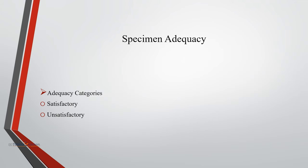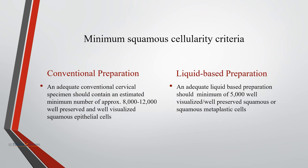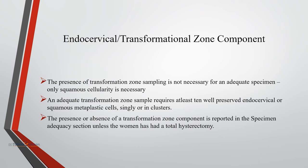Regarding specimen adequacy, cellularity is the most important quality indicator. Depending on the adequacy criteria, cervical specimens can be categorized as satisfactory or unsatisfactory. For conventional preparation, a minimum of approximately 8,000 to 12,000 well-preserved and well-visualized squamous epithelial cells are required. For liquid-based cytology, a minimum of 5,000 well-visualized squamous or squamous metaplastic cells are needed. The presence of transformation zone sampling is not necessary for an adequate specimen; only squamous cellularity is necessary.